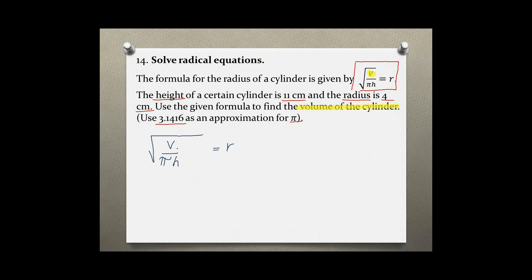I need to get rid of the radical and I can do that by raising it to the power of its index which is 2 on both sides. On the left this cancels out and I have v over pi h equals r squared.